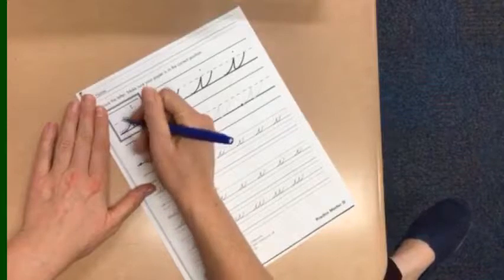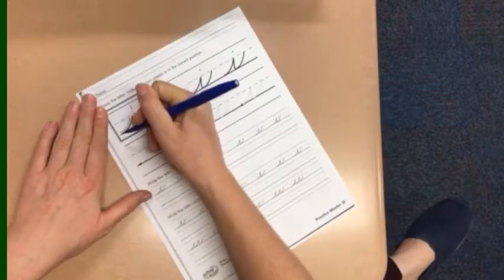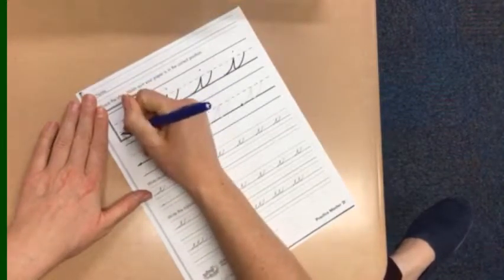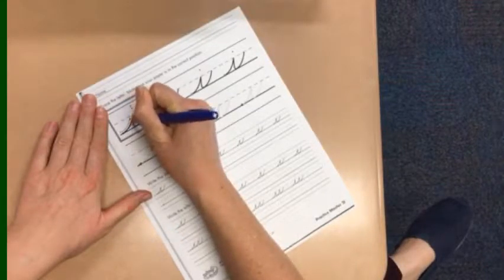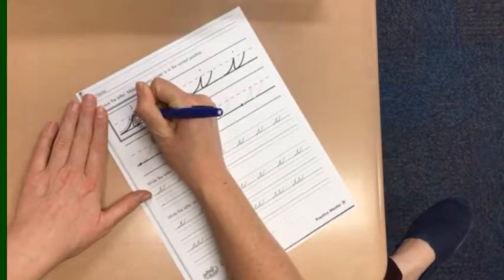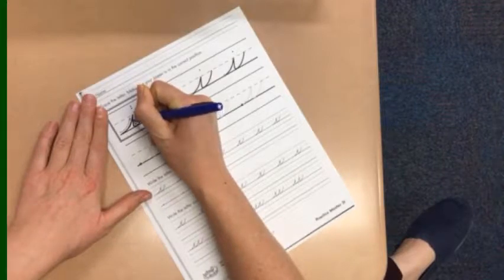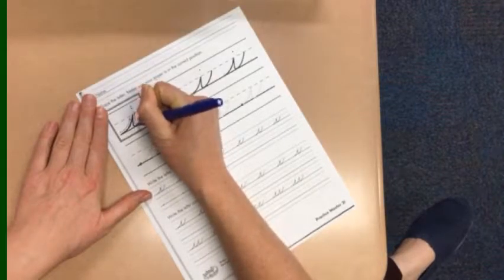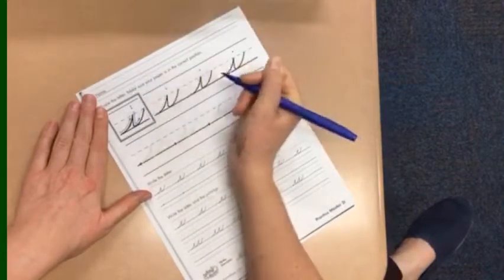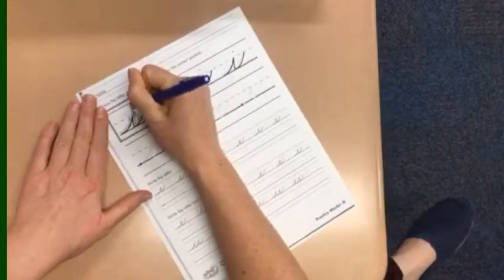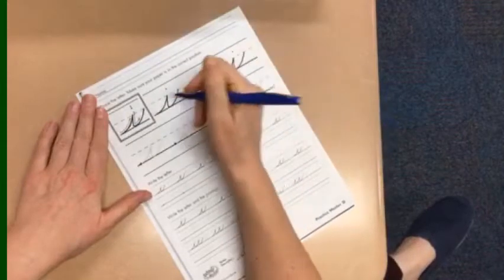As you work on your i's, we're going to start by tracing a couple of the examples. We start down on the baseline and curve up with an undercurve. When we hit the midline, we're going to do a slant, and then we are going to follow that same curve up for our second stroke, followed by a dot for the top of our i.